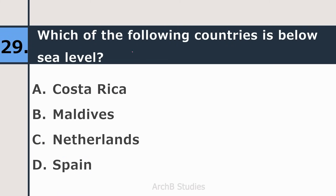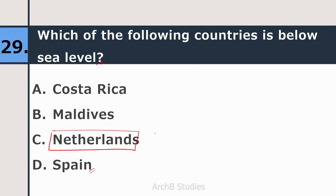Twenty-ninth question: which of the following countries is below sea level — Costa Rica, Maldives, Netherlands, or Spain? The right answer is Netherlands. It is not fully below sea level, but a quarter of the Netherlands is below sea level.